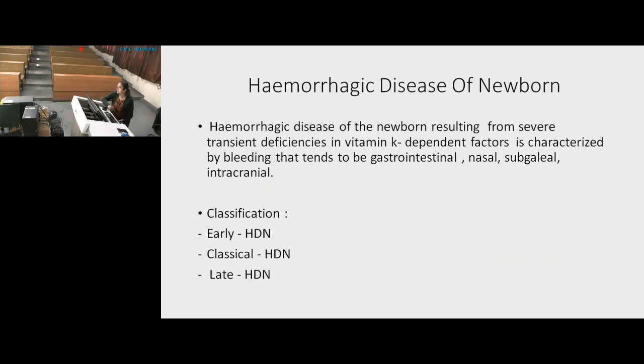The disease is characterized by bleeding — including GI bleeding, nasal bleeding, subgaleal bleeding, and intraventricular bleeding.